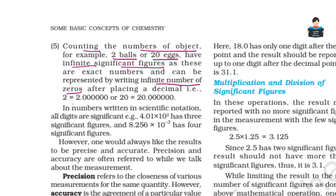So when you count objects like balls, eggs, pens, pencils, those are exact numbers. If I tell you there are 100 pencils, that is an exact number and can be represented by writing infinite zeros.